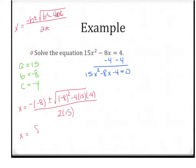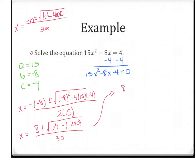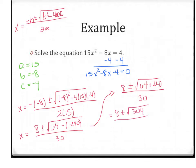A negative negative 8 is a positive 8, plus or minus the square root. Negative 8 squared is a positive 64, minus — and if we do 4 times negative 15 times 4, we get negative 240 — all over 30, which leads us to 8 plus or minus the square root of 64 plus 240, all over 30. So 8 plus or minus the square root of 304, all over 30.